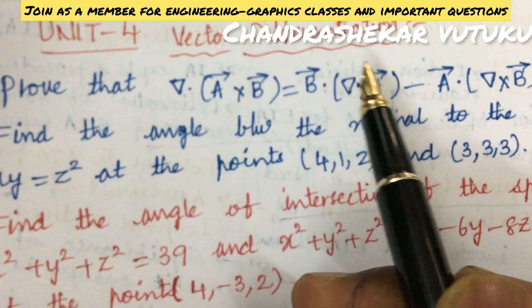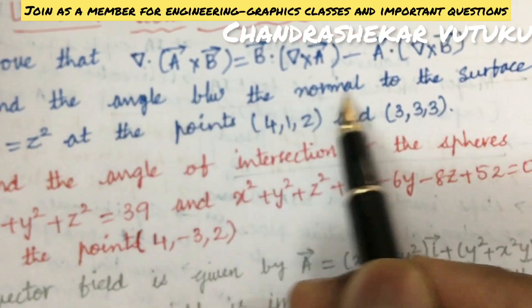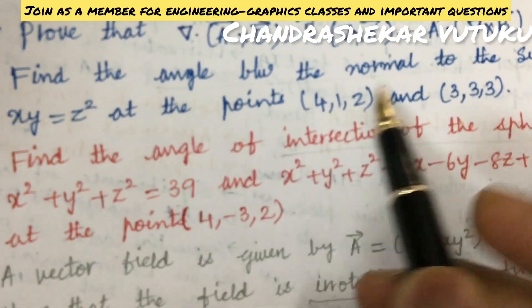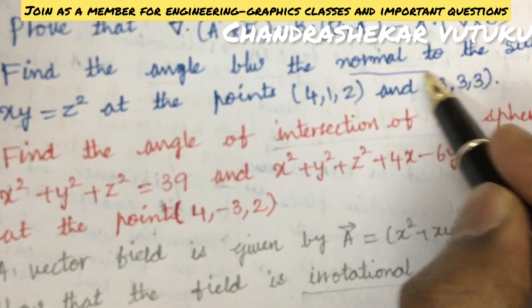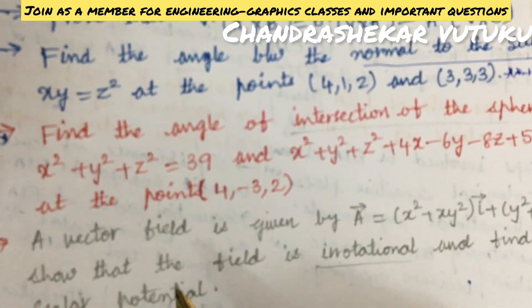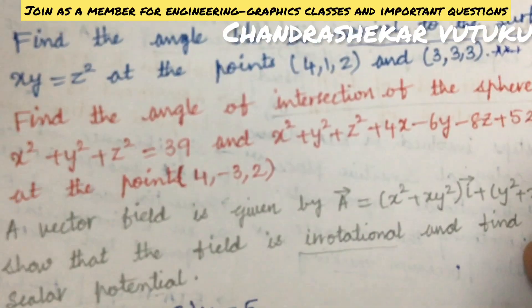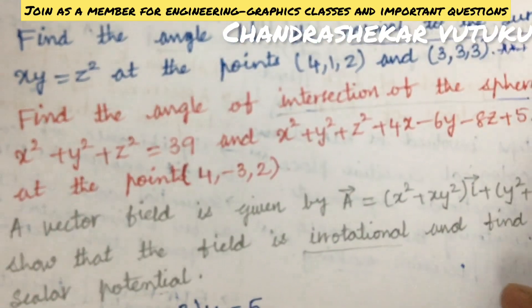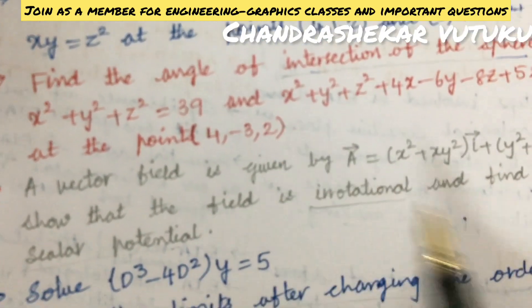Unit 4 is about vector differentiation. Prove that this relation. Find the angle between the normal to the surface - this is also a very important question asked several times. Find the angle of intersection of spheres. Please concentrate on this part and work accordingly.